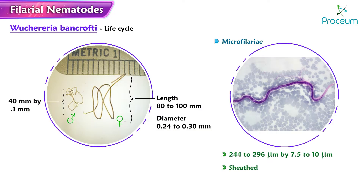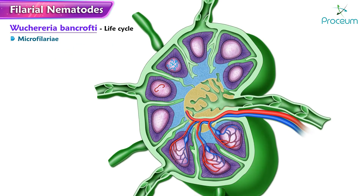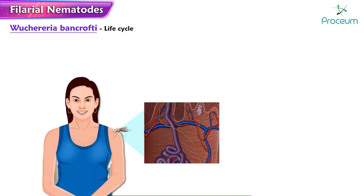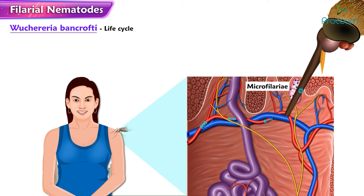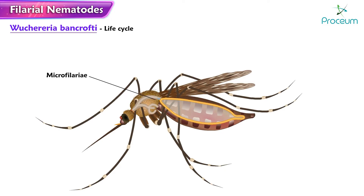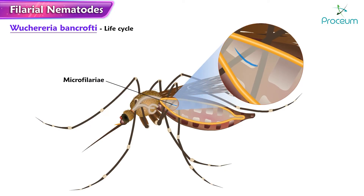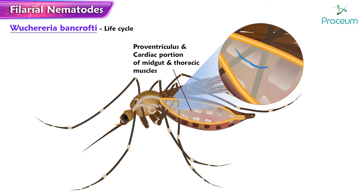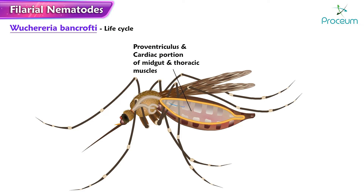Adults produce microfilariae measuring 244 to 296 micrometers by 7.5 to 10 micrometers, which are sheathed and have nocturnal periodicity. The microfilariae migrate into lymph and blood channels. A mosquito ingests the microfilariae during a blood meal. After ingestion, the microfilariae lose their sheaths and some work their way through the wall of the proventriculus and cardiac portion of the mosquito's midgut, reaching the thoracic muscles.